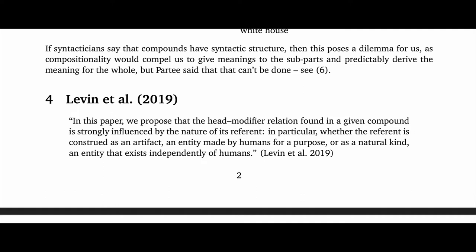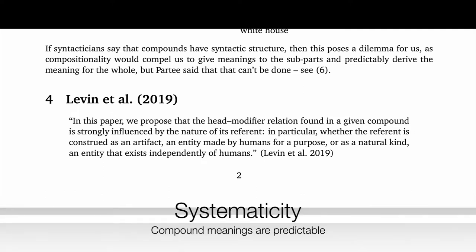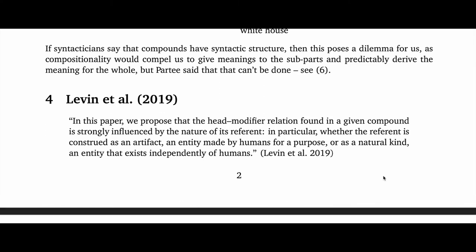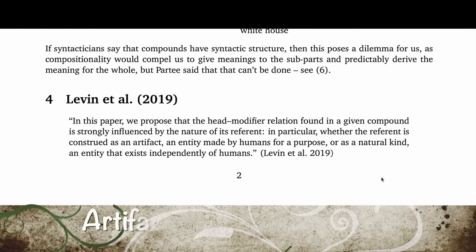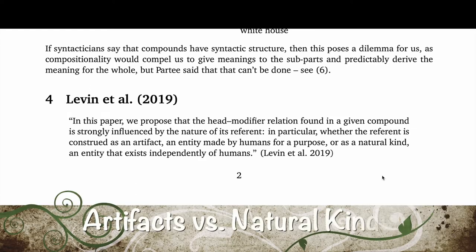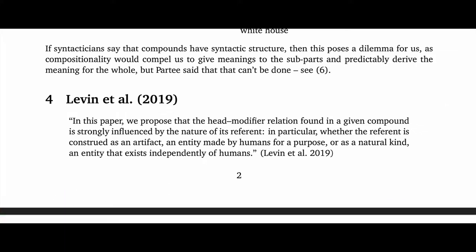There are two really big takeaways here. First, they're saying that the interpretation of a given compound is predictable — systematic, in the terms of their paper's title. Second, they're beginning to identify some of the ingredients in that systematicity: whether the compound refers to an artifact or natural kind. That's something that is, to borrow from the compositionality principle, predictable in some sense from the parts.